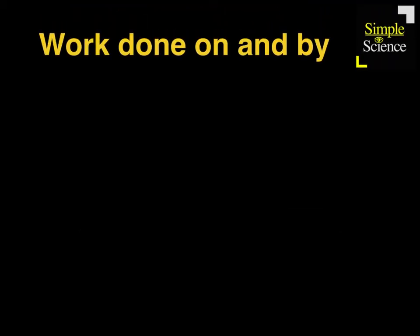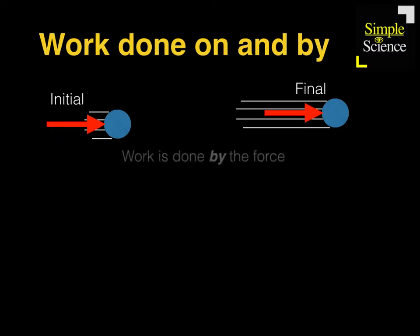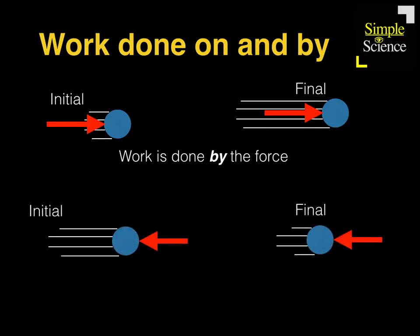Now let's look at the concept of work done on and by. In the first situation, this ball is initially moving to the right and the force is also acting to the right. In this situation, we say that work is done by the force — whenever the force is in the same direction as the motion, work done is by the force. Whereas if the ball is moving against the direction of the force, we say that work is done on the force because they are in opposite directions.